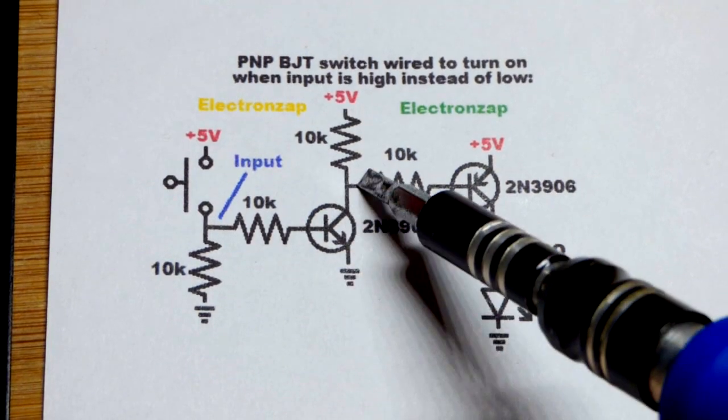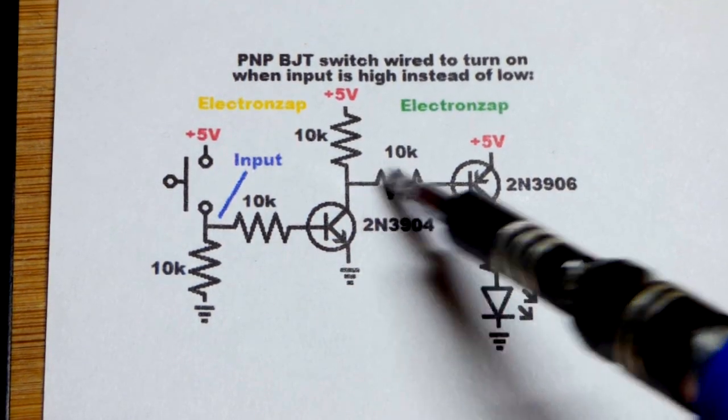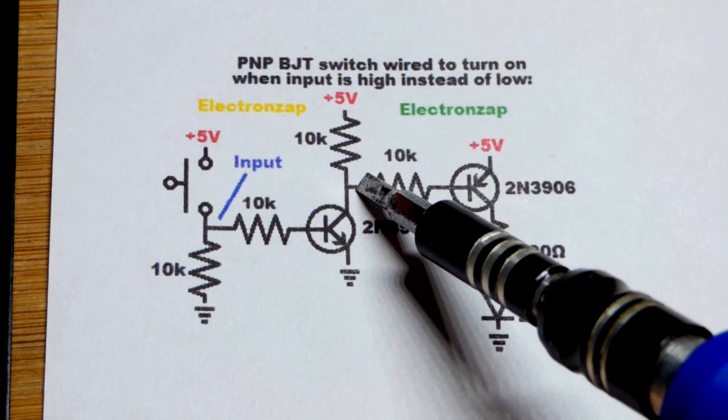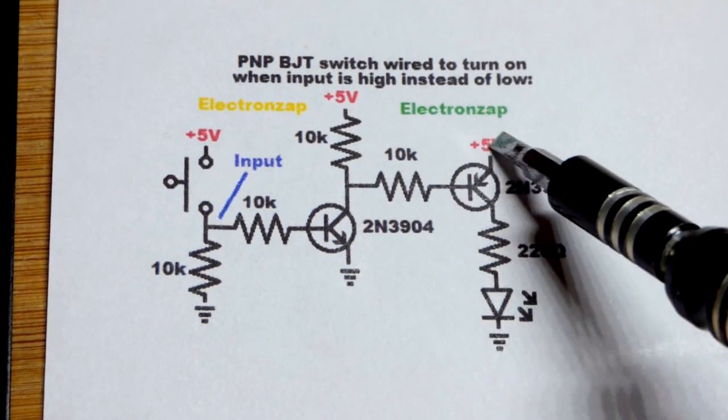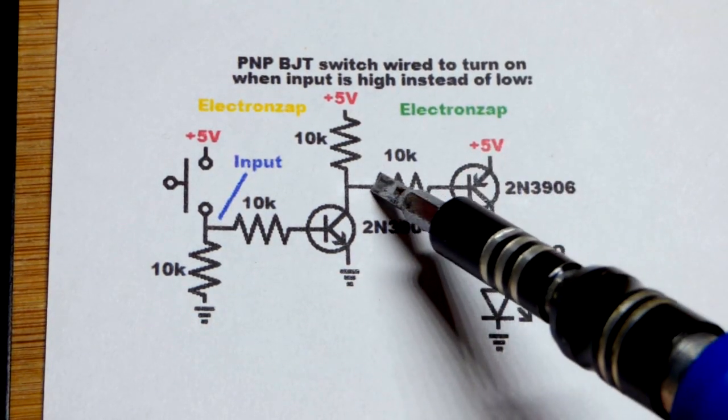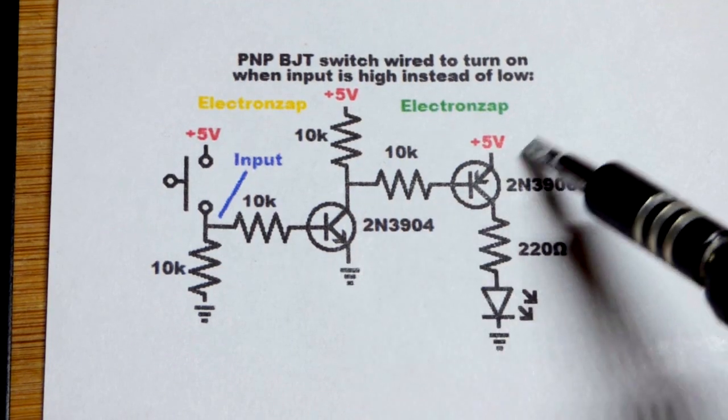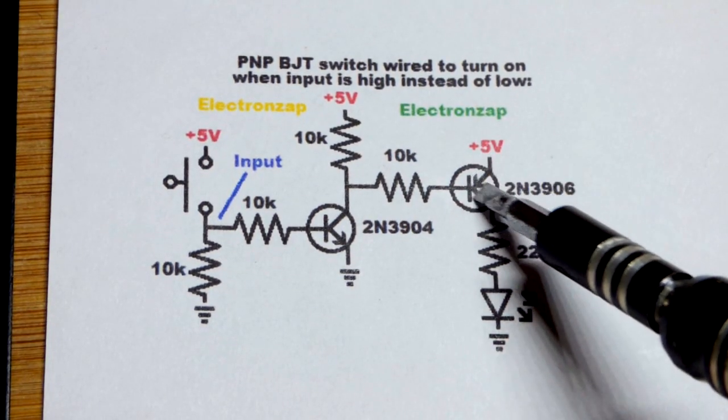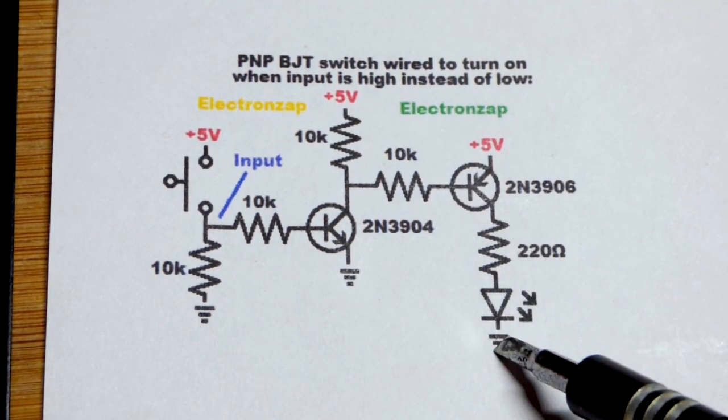If we connect to ground there, so a low input to the PNP bipolar junction transistor wired as a switch, then we'll have a small current path through the 10 kilo ohm resistor there, allowing many multiples of current to go from emitter to collector and through the load.